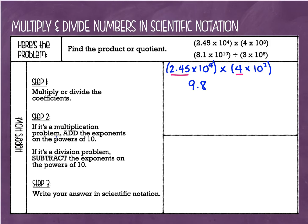All right, next step. If it's a multiplication problem, we're going to add the exponents on the powers of 10, and if it's a division problem, we're going to subtract them. Well, again, we have a multiplication problem, so we are going to add our exponents. Remember, scientific notation is always times 10, and if I have a 10 to the fourth power and a 10 to the third power, that's going to give me a 10 to the seventh power. So we are finished.